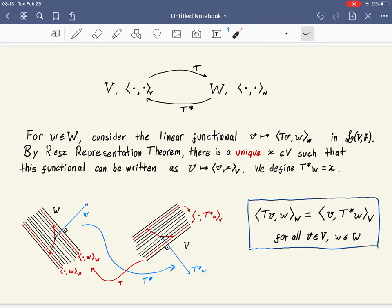It says, for each vector w in W, so we have two inner product spaces V and W, each one with their own inner product, and I'm emphasizing the inner product space here to show that these are two different inner products.